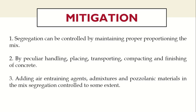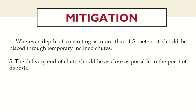Pozzolanic materials like fly ash, silica fume, and rice husk ash provide fineness and help reduce the effect of separation. Wherever the depth of concreting is more than 1.5 meters, concrete should be placed through temporary inclined chutes. The angle of inclination may be kept between 1:3 and 1:2 so that the concrete from the top of the chutes travels smoothly to the bottom.